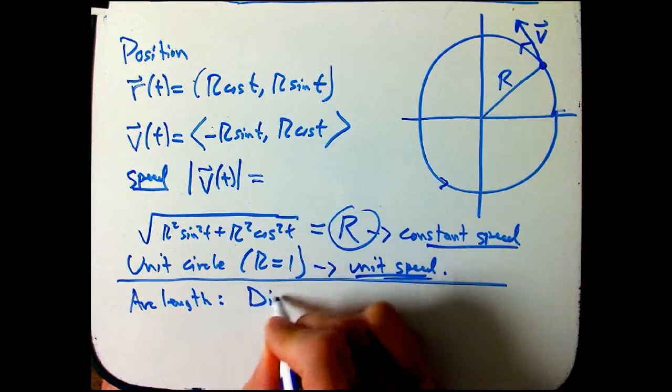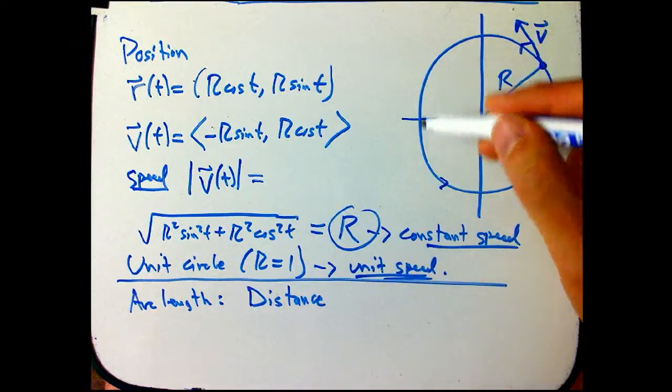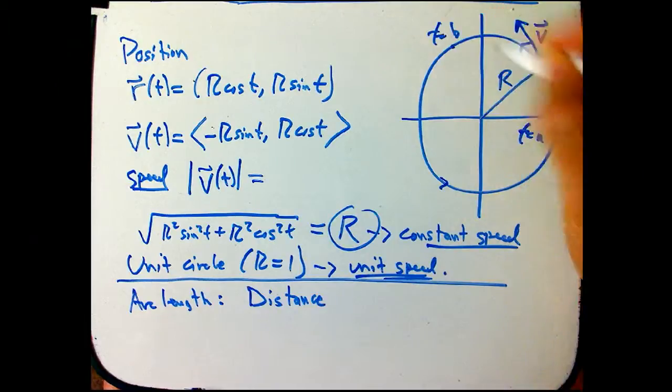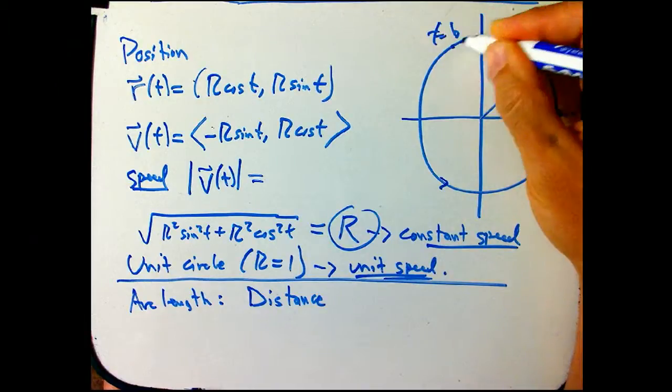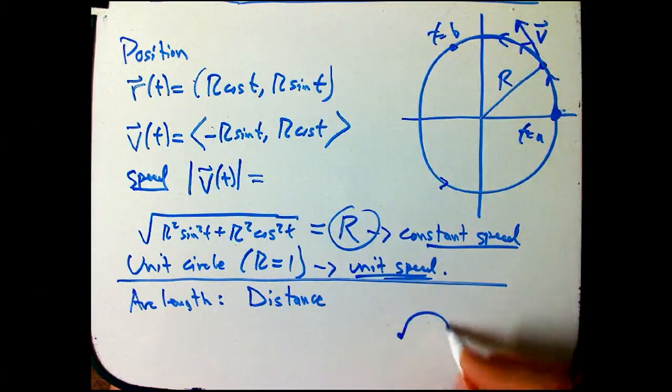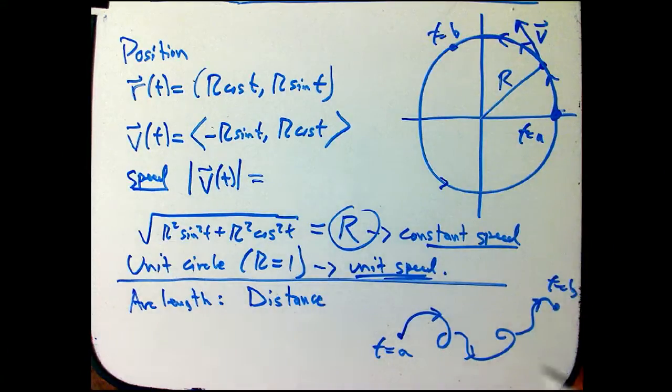So that's the distance traveled by some point. Say a bug is crawling on the whiteboard here. And we want to know from certain time t, let's say t = a, to t = b, I want to know how far that bug went. Or in general, it could be some funky curve, three dimensions, like this, starts at t = a, ends at t = b. And I want to know the length of that curve.